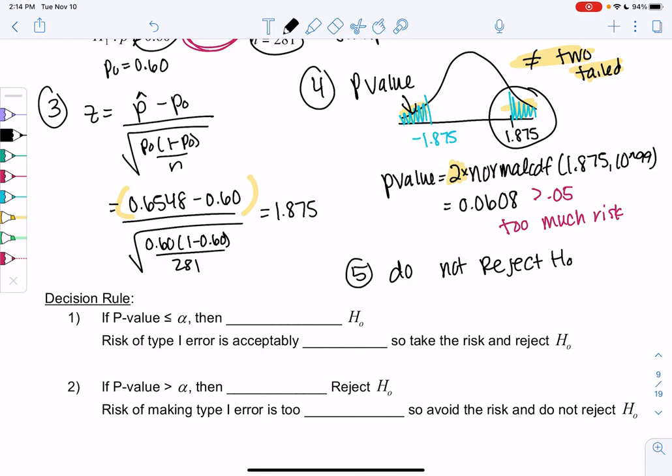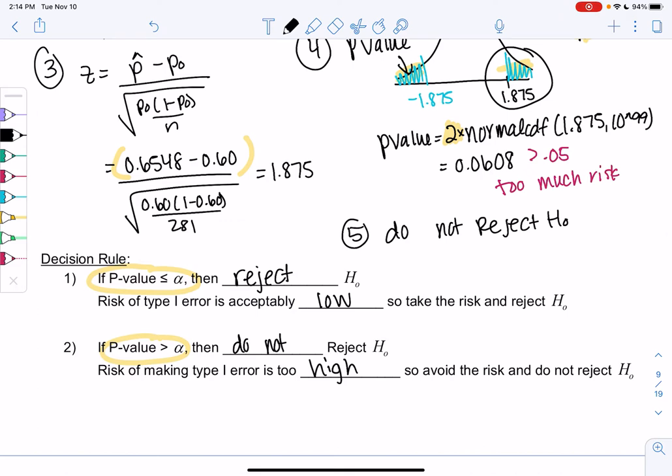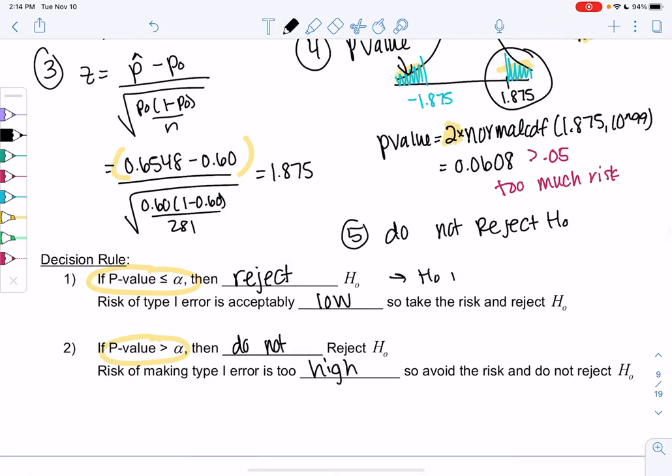So the decision rule is when the p value is less than or equal to alpha, then we'll go ahead and reject. That's what we did in example 1. The risk of type 1 error is acceptably low. So we'll go ahead and take the risk. In example 2, p value is greater than alpha. So we did not reject because the risk of making a type 1 error is too high. And so the idea is when we reject, it means we're saying H0 is false. So H1 must be true. And then the other case, we're actually not saying H0 is true. We're just saying H0 might be true. We don't know. We don't have evidence.